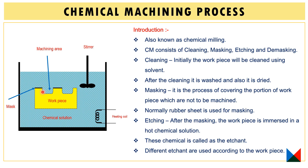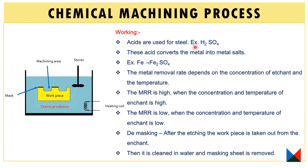The unmasked area will be machined by the etchant, and erosion occurs there. Different etchants are used according to the workpiece material. For steel, sulfuric acid is used as the etchant — the acid converts the metal into metal salts. For example, using iron, iron sulfate is formed. This causes metal removal in the unmasked area, forming a slot through the erosion process.